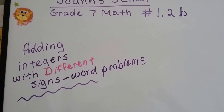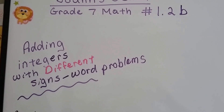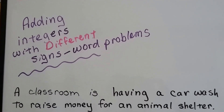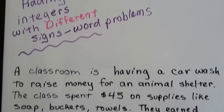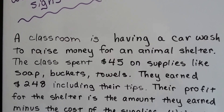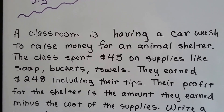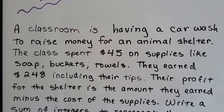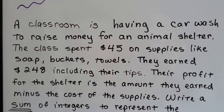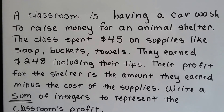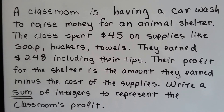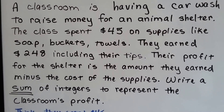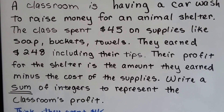Grade 7 math, lesson 1.2b: adding integers with different signs — word problems. A classroom is having a car wash to raise money for an animal shelter. The class spent $45 on supplies like soap, buckets, and towels, and earned $248 including their tips. Their profit is the amount they earned minus the cost of the supplies.